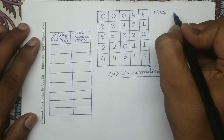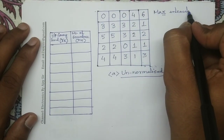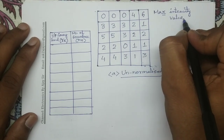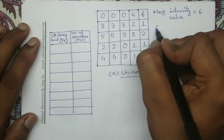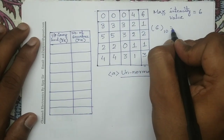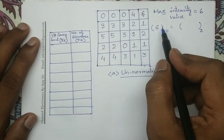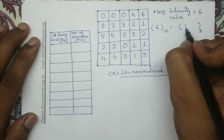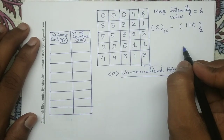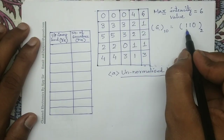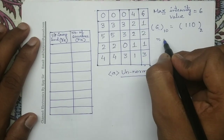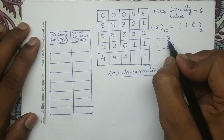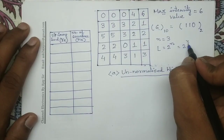The maximum pixel intensity value is equal to 6. Now we will represent this decimal number 6 in binary format. Decimal number 6 in binary is 1, 1, 0. The minimum number of bits required to represent decimal number 6 is equal to 3, so N equals 3. And we know L equals 2 to the power N. If N equals 3, then L equals 2 to the power 3, which is equal to 8.